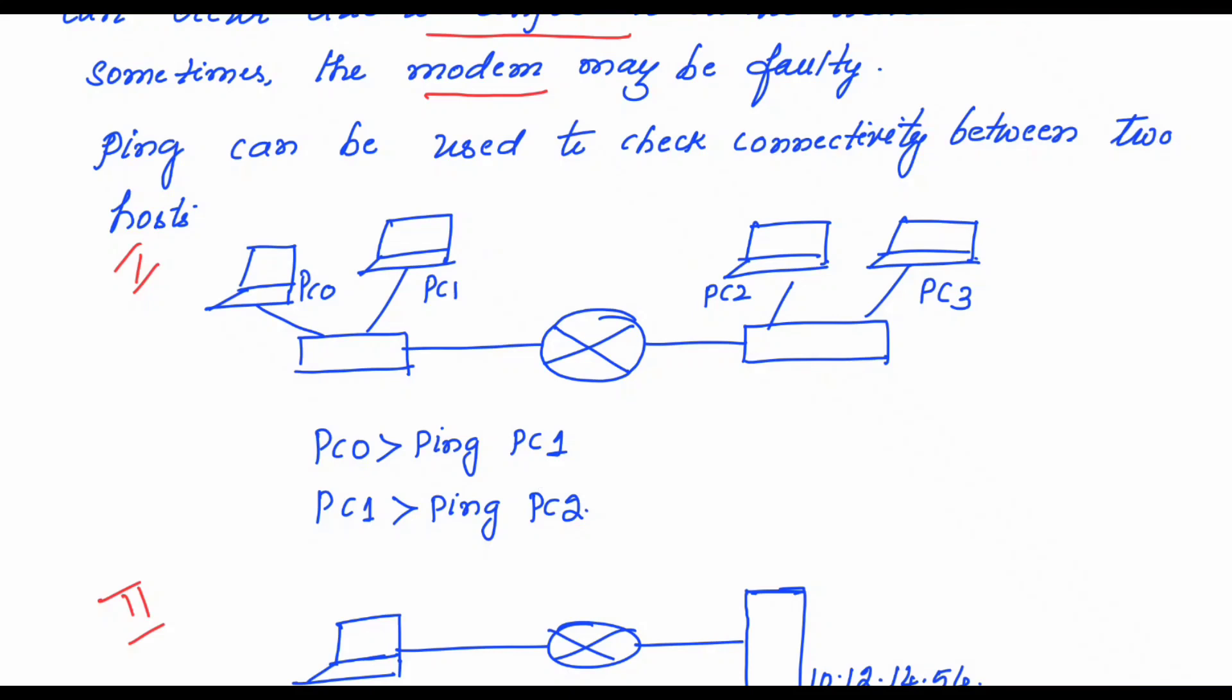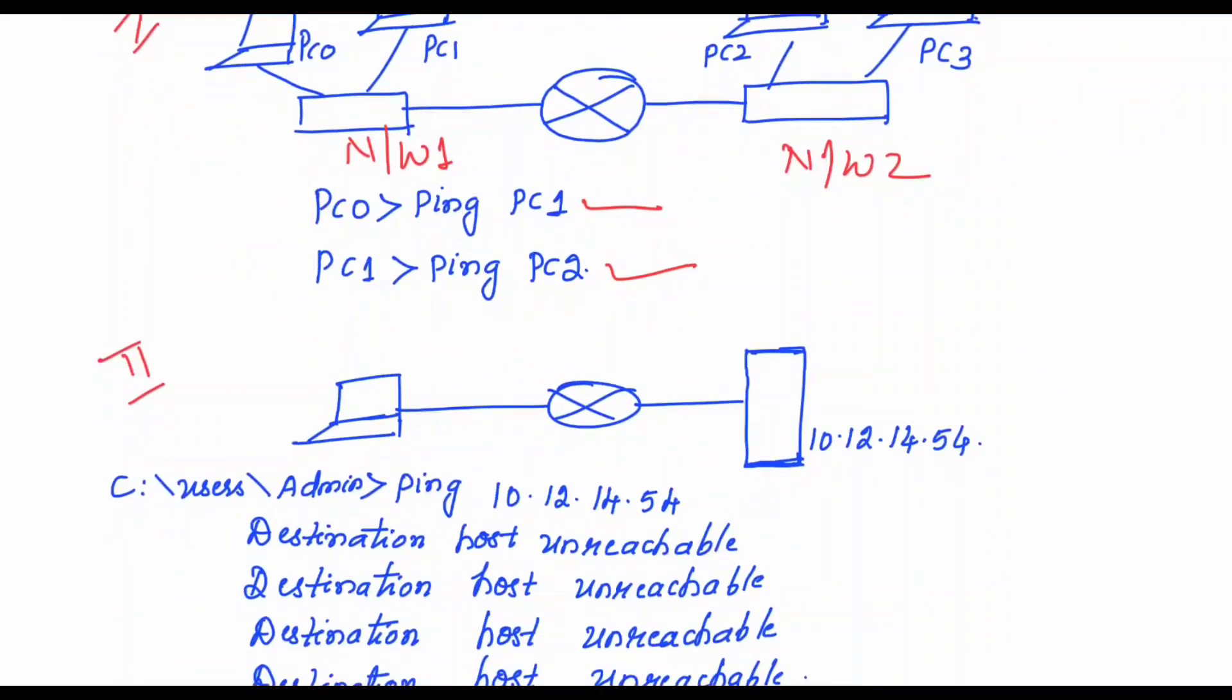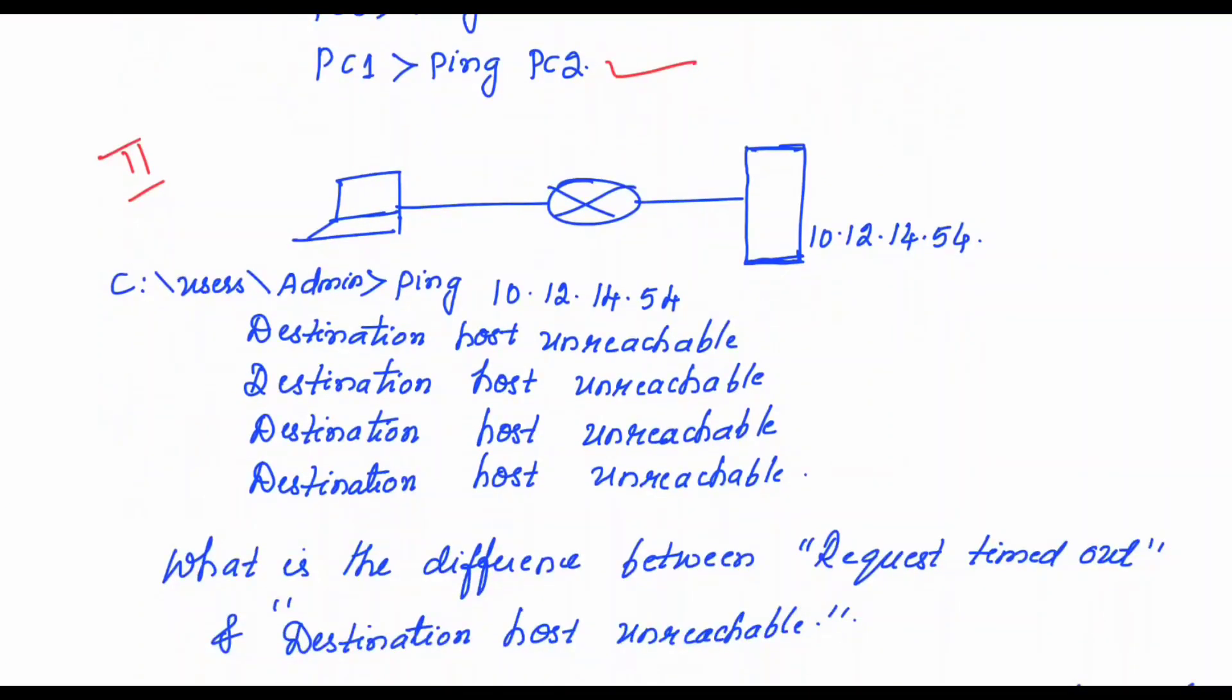Let us see one scenario here wherein I have shown two networks, network 1 and network 2. PC0 is in network 1 and it wants to ping PC1 which is in the same network. And in the next case, PC1 is in network 1 and it wants to ping PC2 which is in network 2. Now one more possibility is there - ping command also gives one more type of output.